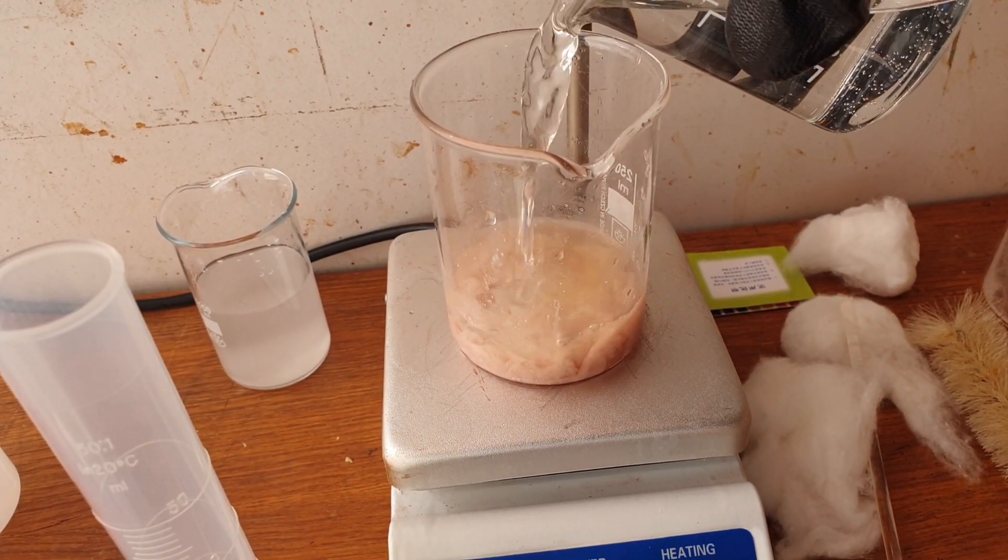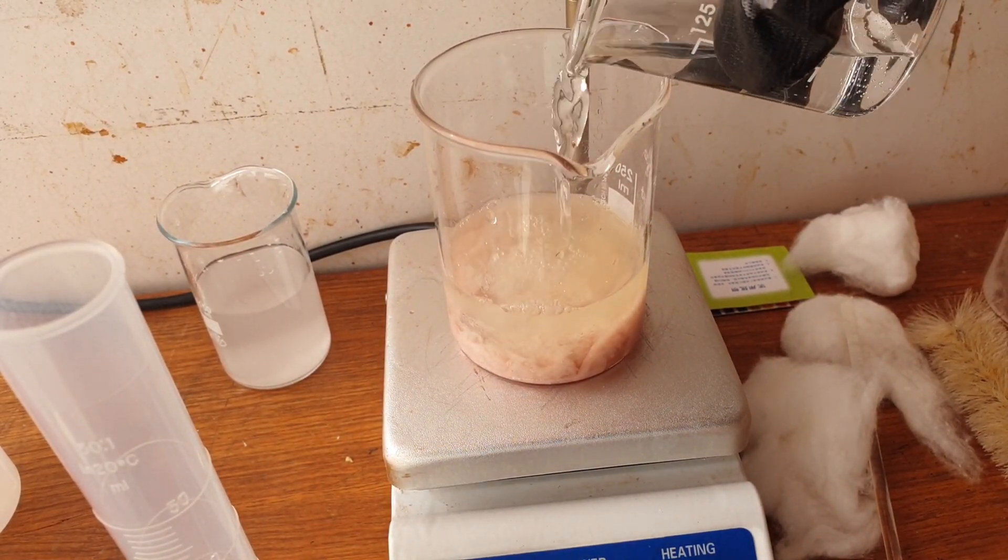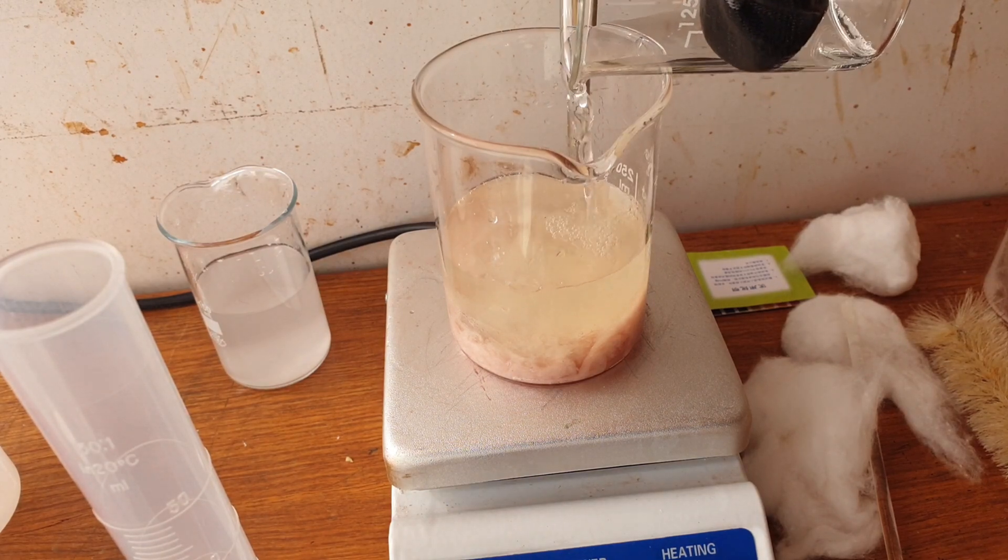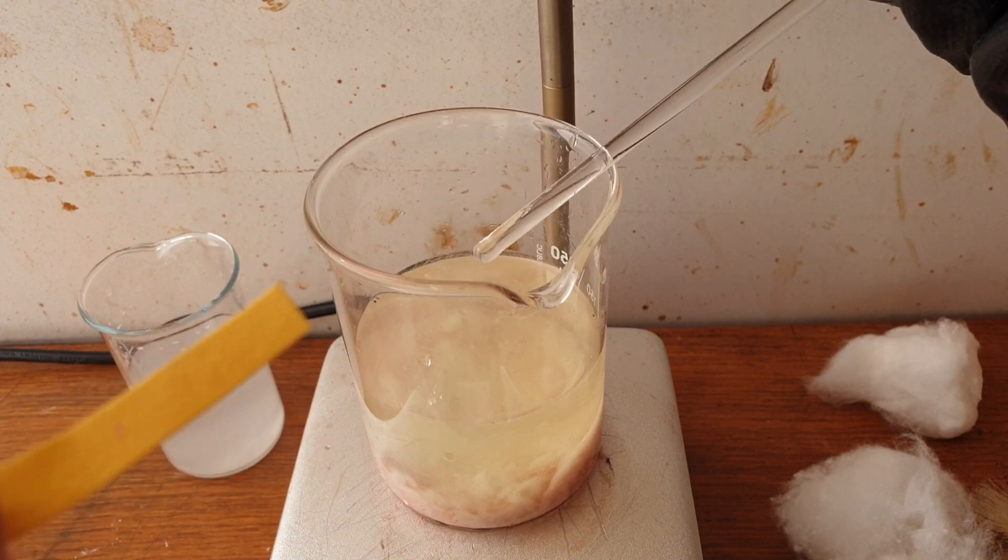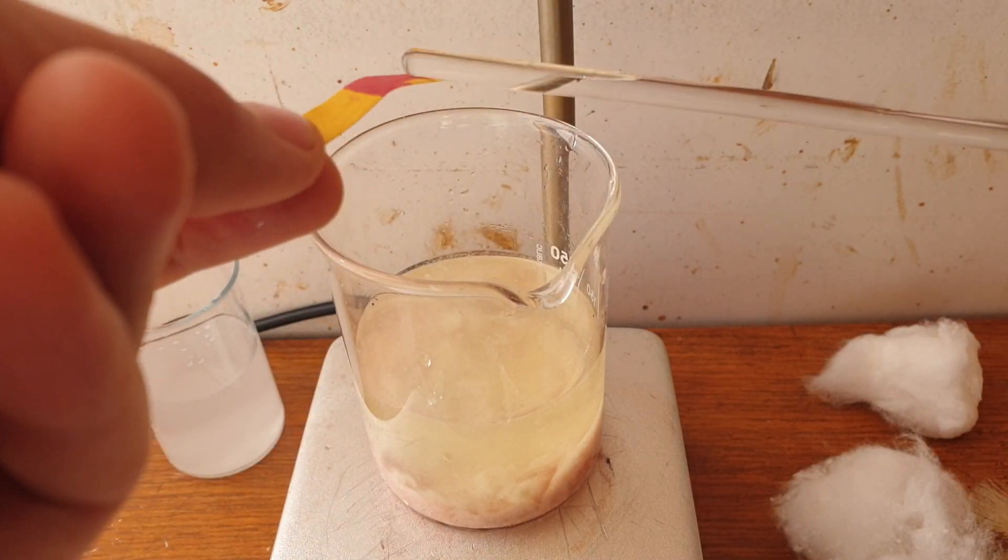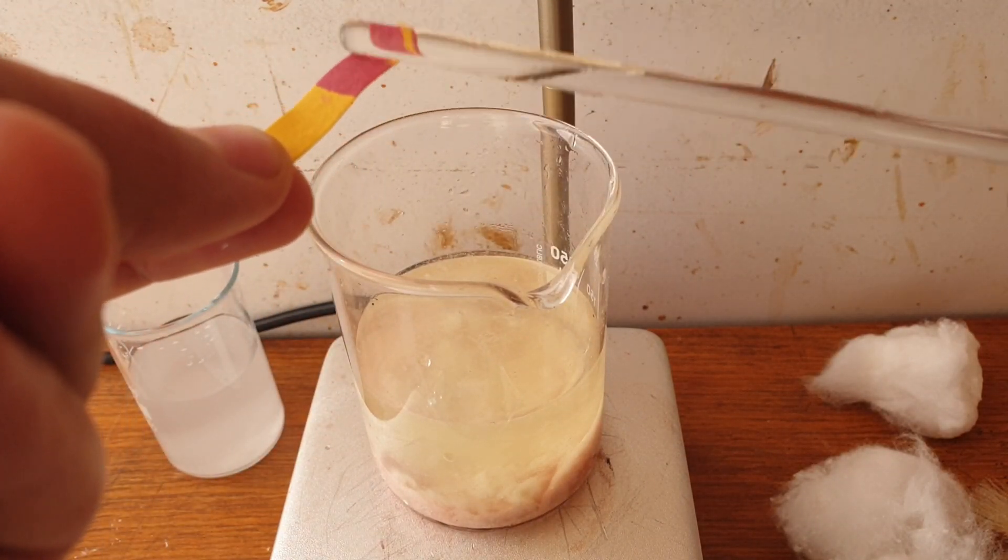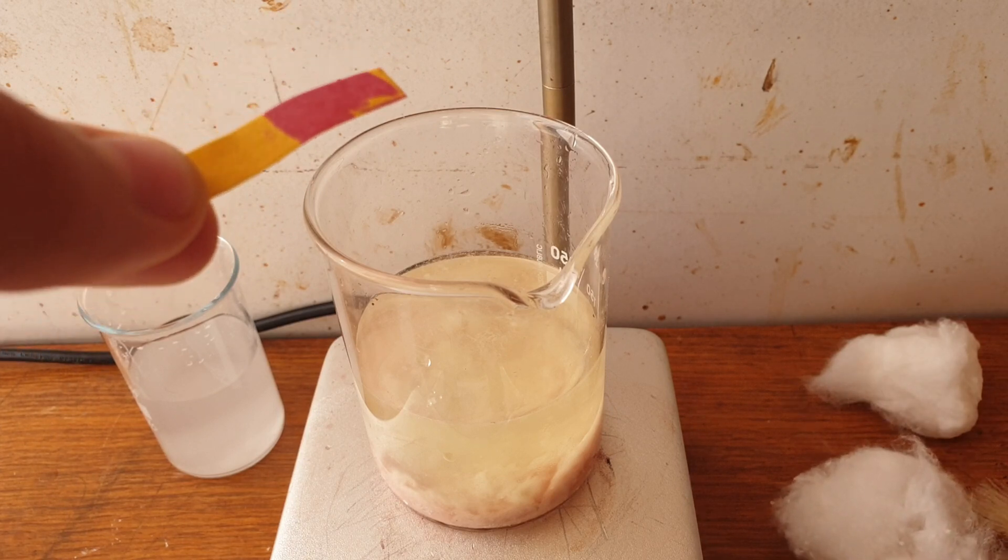Deionized water would work best, but since I don't have any, I'll just use some distilled water. We're using the sodium bicarbonate solution to neutralize the mixture. Check the pH using a pH indicator. You can use phenolphthalein, but I just use pH paper. Also, try to get it as close to 7 as possible.